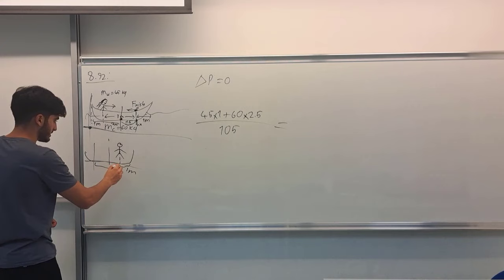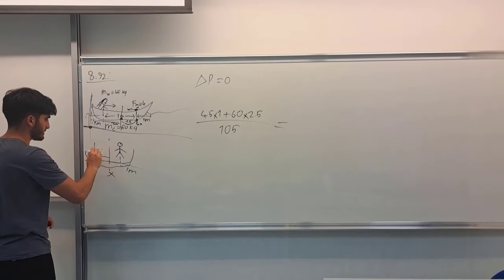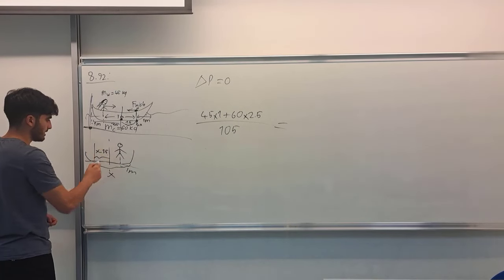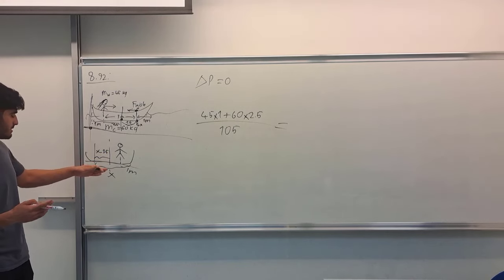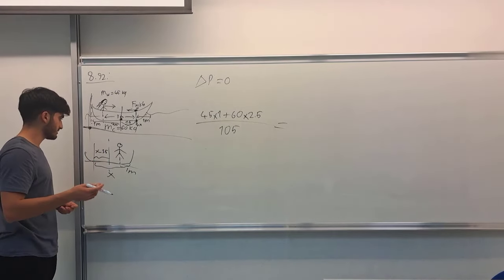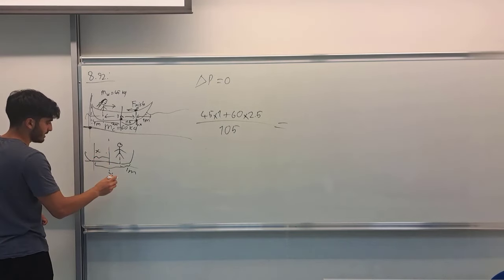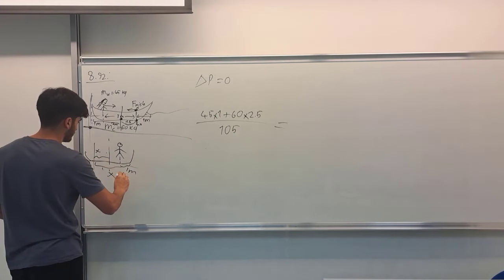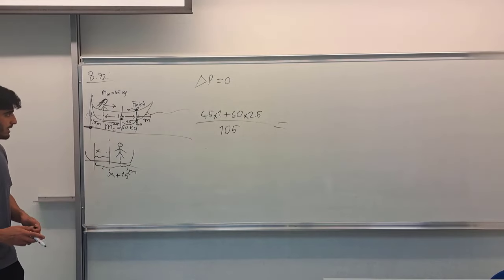So if I call this distance x, then this distance becomes x minus 1.5. But in the question how much this canoe will slide behind is being asked, and therefore I can call this x and I can call this distance as x plus 1.5.